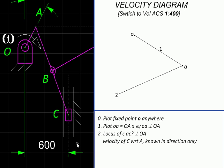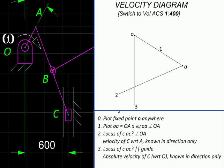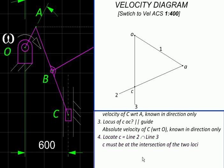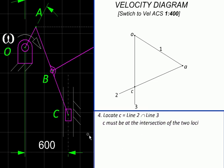Since this guide is fixed, that is absolute velocity of C. So we can plot that from our absolute stationary point O. So this is another locus of velocity of C, and wherever these two meet, that is where our point C will be. So we have found the velocity image of C.